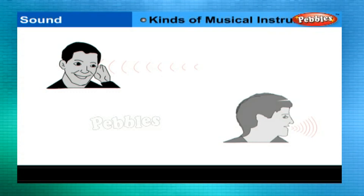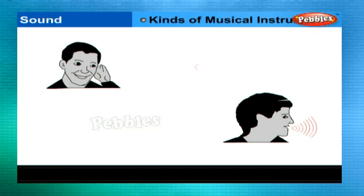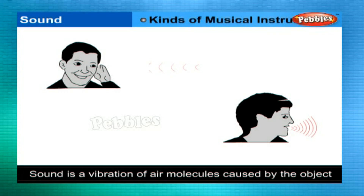If you had to draw a picture representing sound, what would you draw? Maybe something like this. Sound is a wave, similar to the ripples on a pond or the ocean waves you might see crashing on a beach. We infer that sound is a vibration or wave of air molecules caused by the motion of an object.